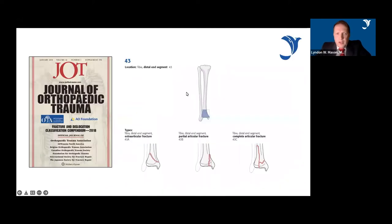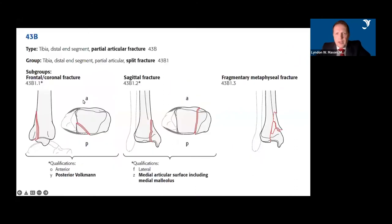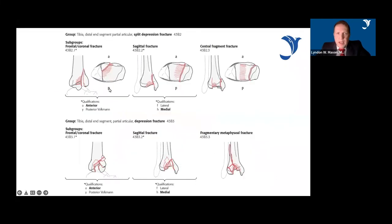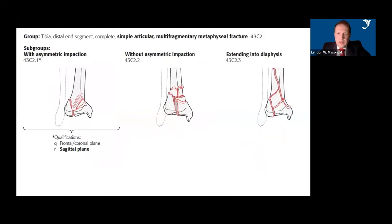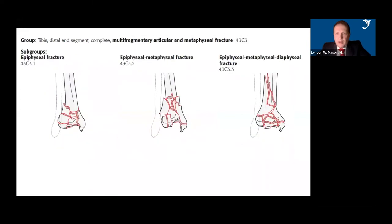Moving on, the 2018 compendium from the OTA and AO Foundation recognised that you could split these into partial articulars — with the typical coronal, sagittal, and fragmentary types as per the Topliss classification — but then you had the impaction fragments, which are your 43-B's. The 43-C's were your complete articular fractures, and these went up in severity depending on the metaphyseal comminution.